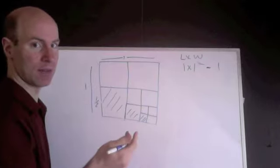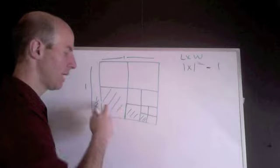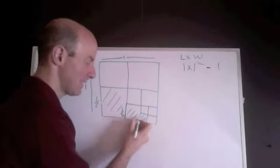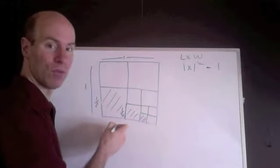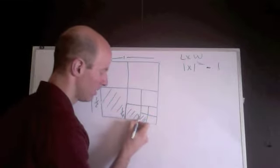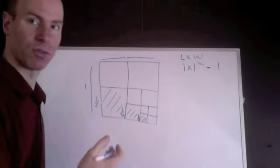This measurement right here, it's half of 1 half, or 1 fourth, and this tiny one is half of 1 fourth, or 1 eighth, so now we have the size of our three squares.